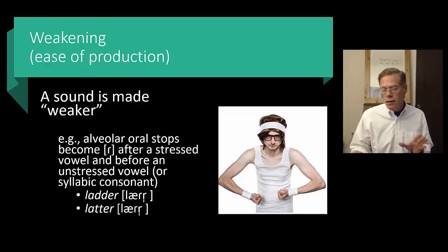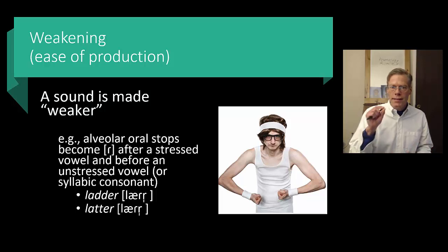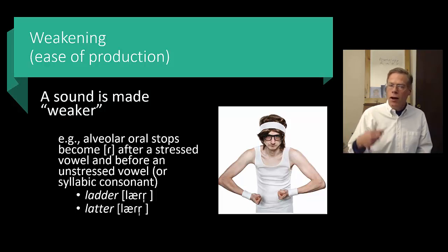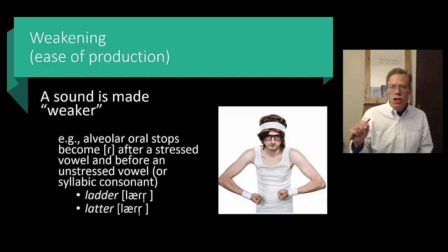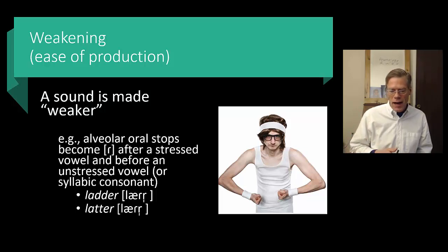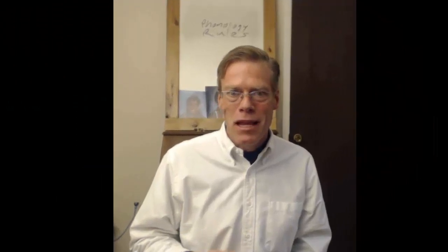This is a particularly American pronunciation: take the word 'ladder' — underlyingly you've got a D, but it becomes a flap: 'ladder'. Likewise with 'latter', which sounds very similar but is spelled with a T and phonemically is a T underlyingly. In this case it also gets pronounced with a flap: 'ladder'. Our alveolar oral stops become a flap after a stressed vowel and before an unstressed vowel. That's a weakening process. The purpose of all these processes is to help us make hypotheses when we're analyzing data.